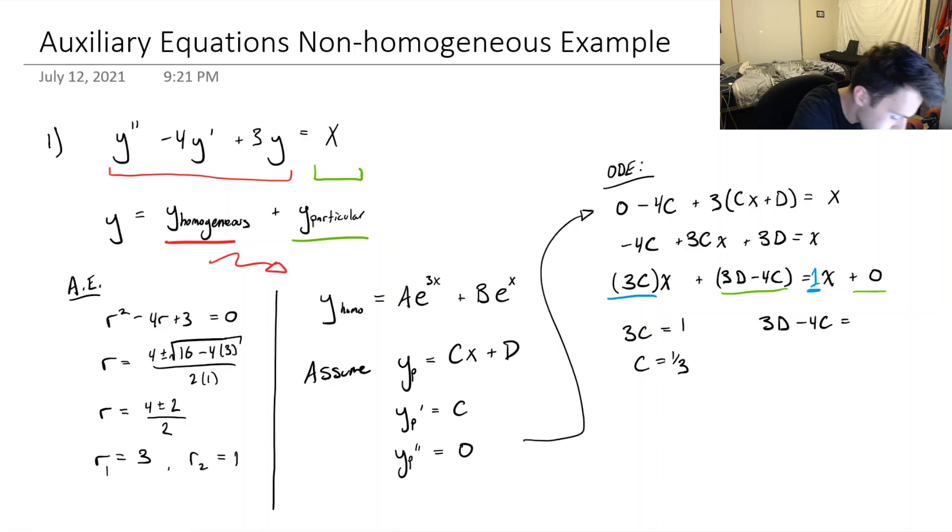And luckily, we know what C is. So 3D minus 4 times 1 third equals 0. 3D is equal to 4 thirds. D is equal to 4 over 9. Perfect. So that means that we could write our particular solution. Particular solution, it was CX plus D. So that's going to be 1 third X plus 4 ninths.